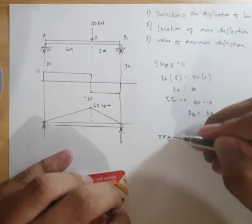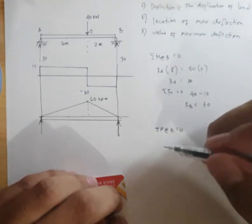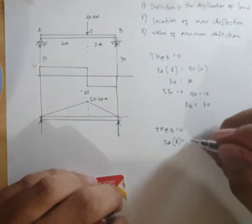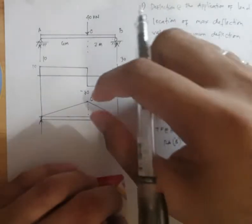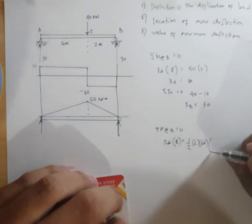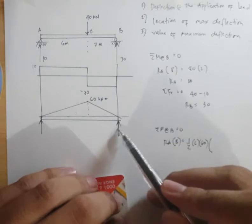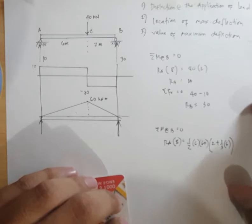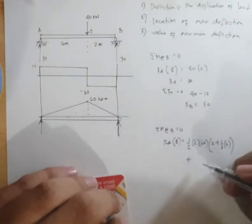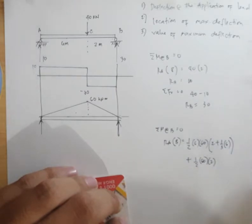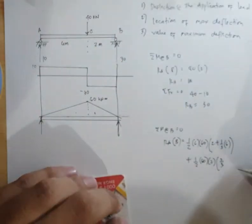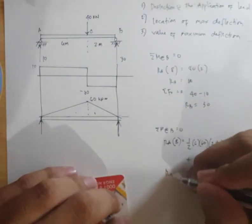So, summation moment at B equal to 0. RA times 8 is equal to, so 2 na ka area. It is 1 half 6 of 60 times centroidal distance. That is 2 plus 1 third of 6. 2 plus 1 third of 6. Plus 1 half 60 by 2. Then, 2 thirds. That is 2 thirds of 2 meters. So, compute RA.